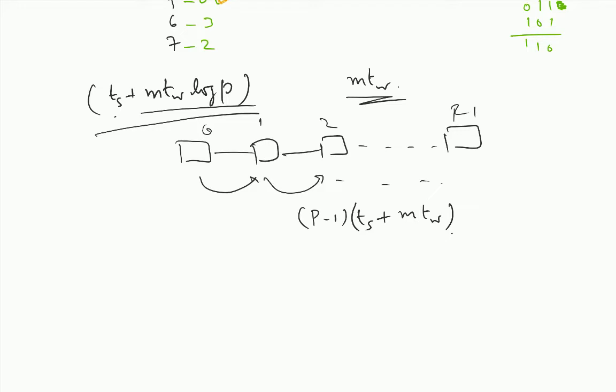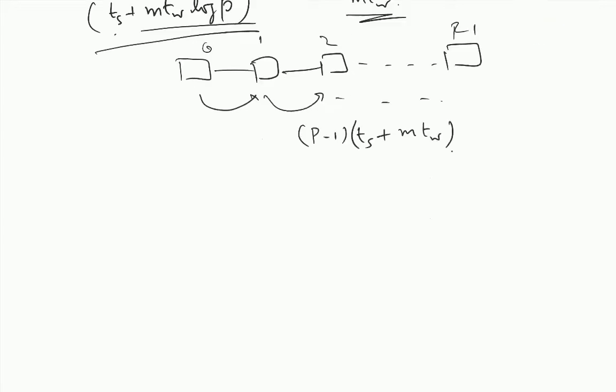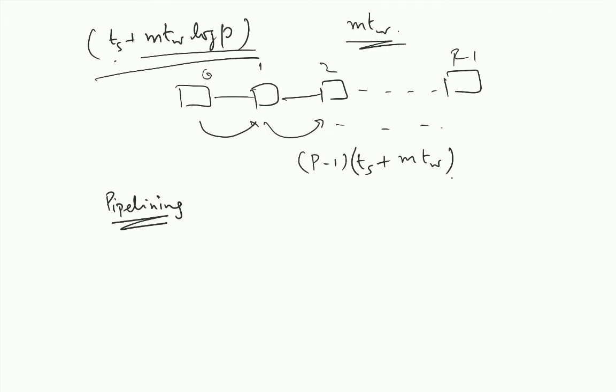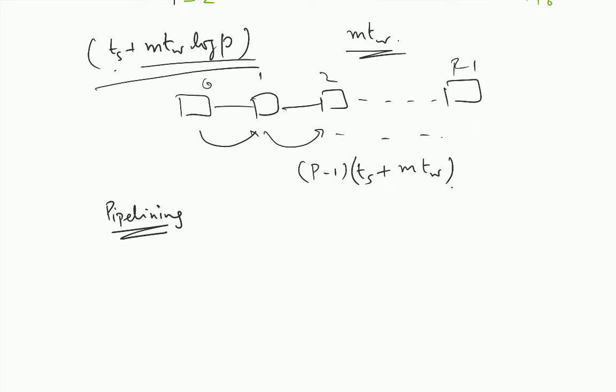But I can do something which is used well in practice, and this is done for large messages. That is something called pipelining. I am going to pipeline the data. So remember this is large data we are dealing with and I want to get a cost which is close to MTW. So I am going to split the data into P parts. What is the size of each part? M by P.